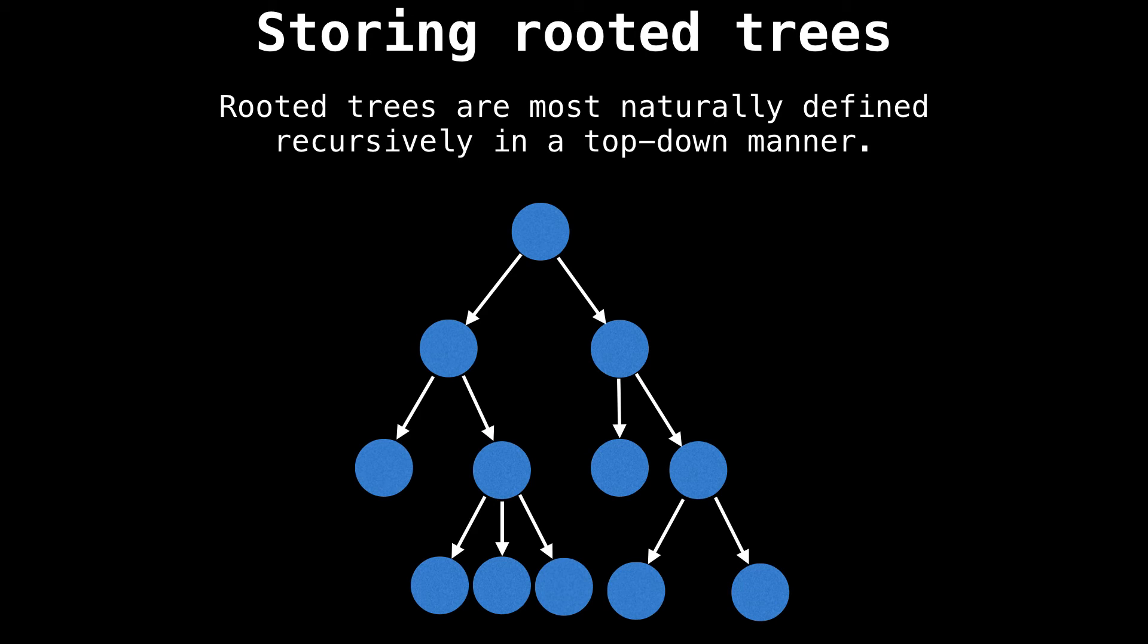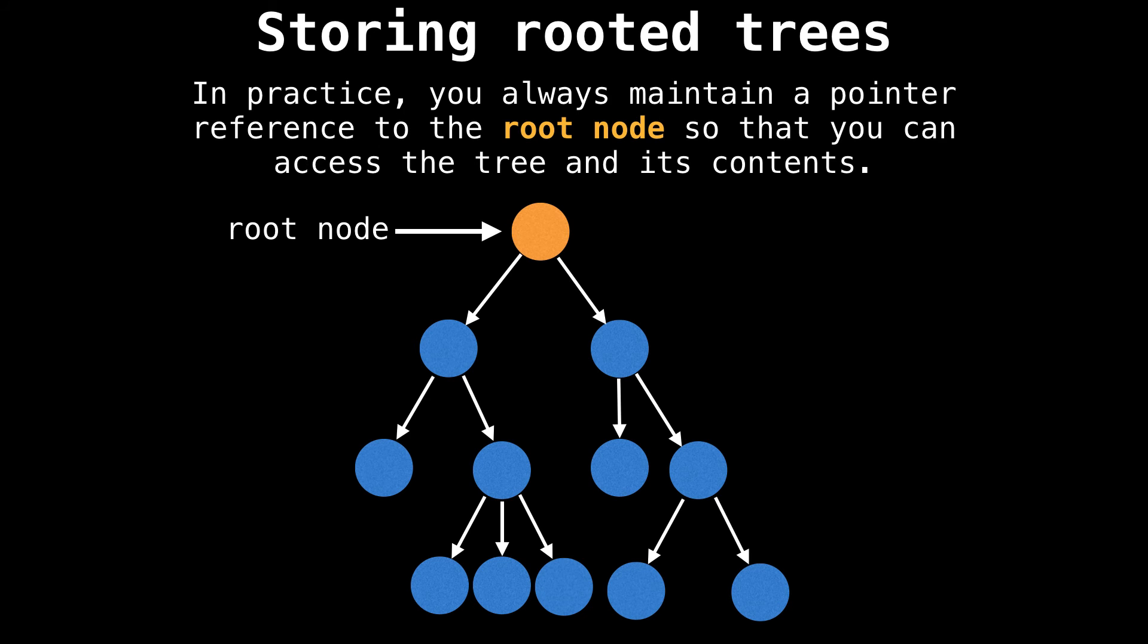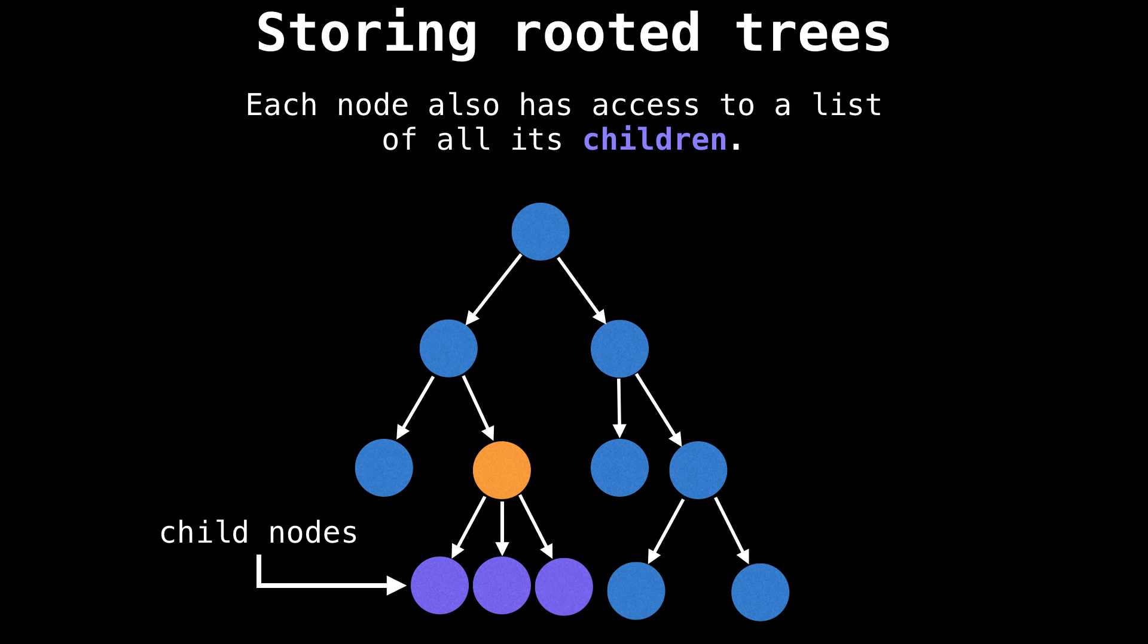Now let's talk about how we store rooted trees. Rooted trees are naturally defined recursively in a top-down manner. In practice, you always maintain a pointer reference to the root node of a tree so that you can access the tree and all its contents. Then each node also has a list of all its children, which are also called child nodes. In this slide, the orange node is the current node we have a reference to, and the purple nodes are all children. All the bottom or leaf nodes of the tree do not have any children.